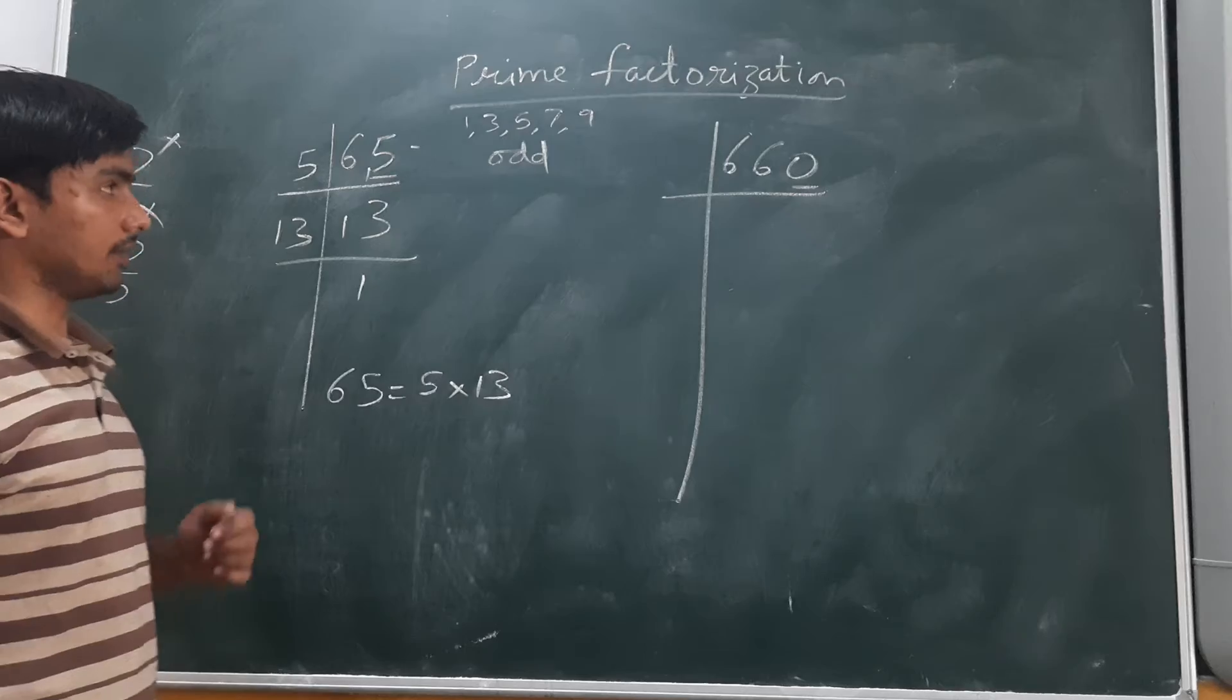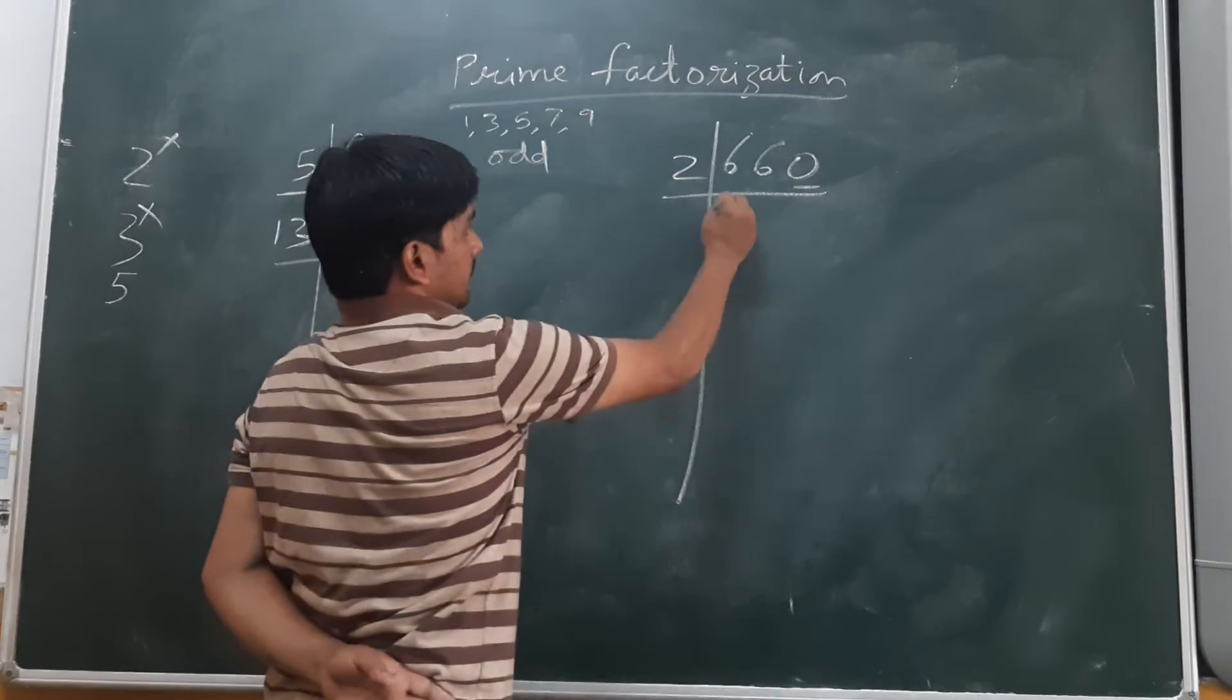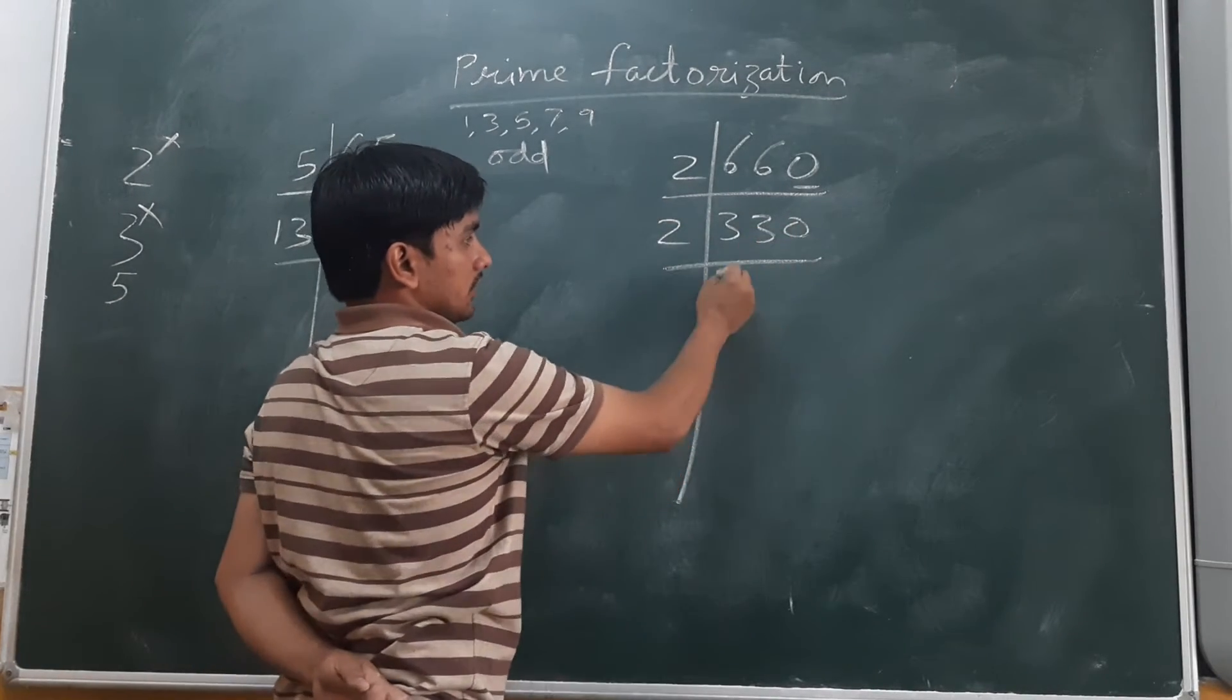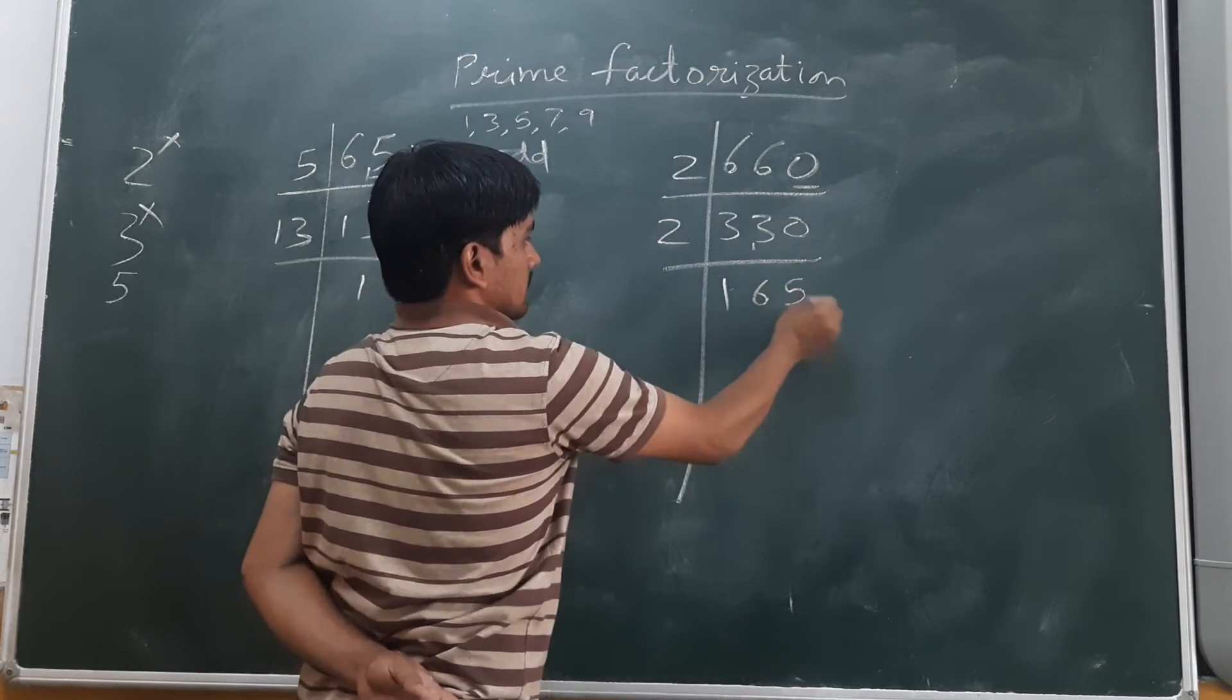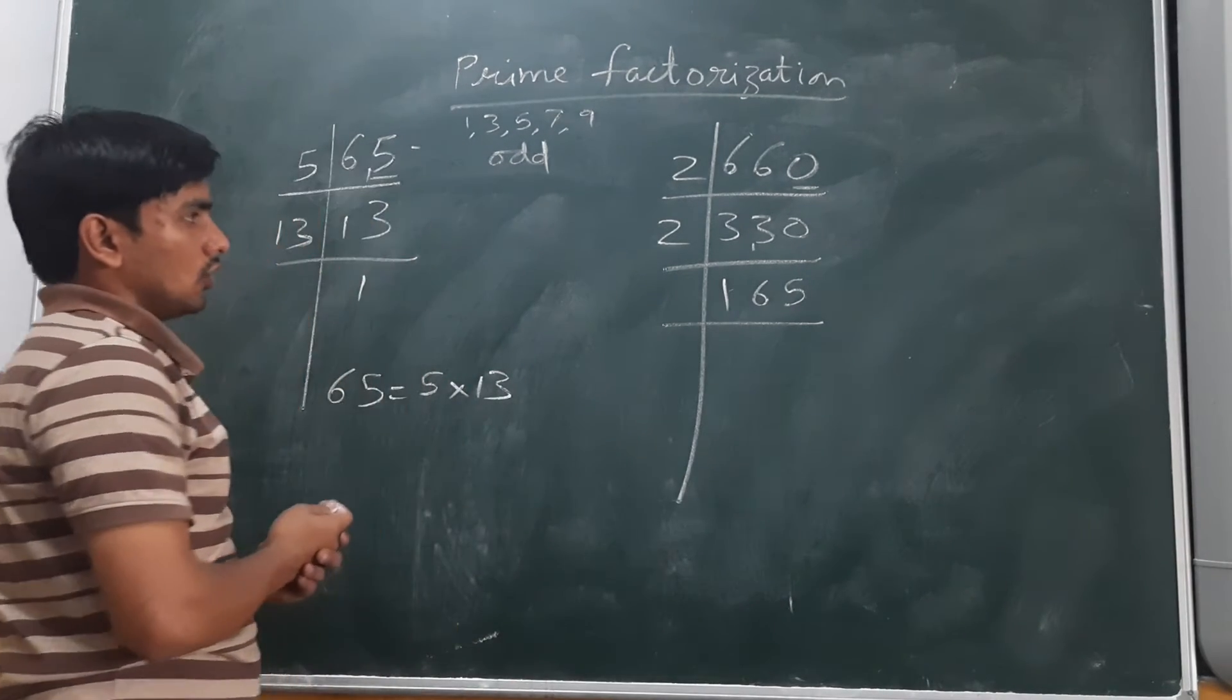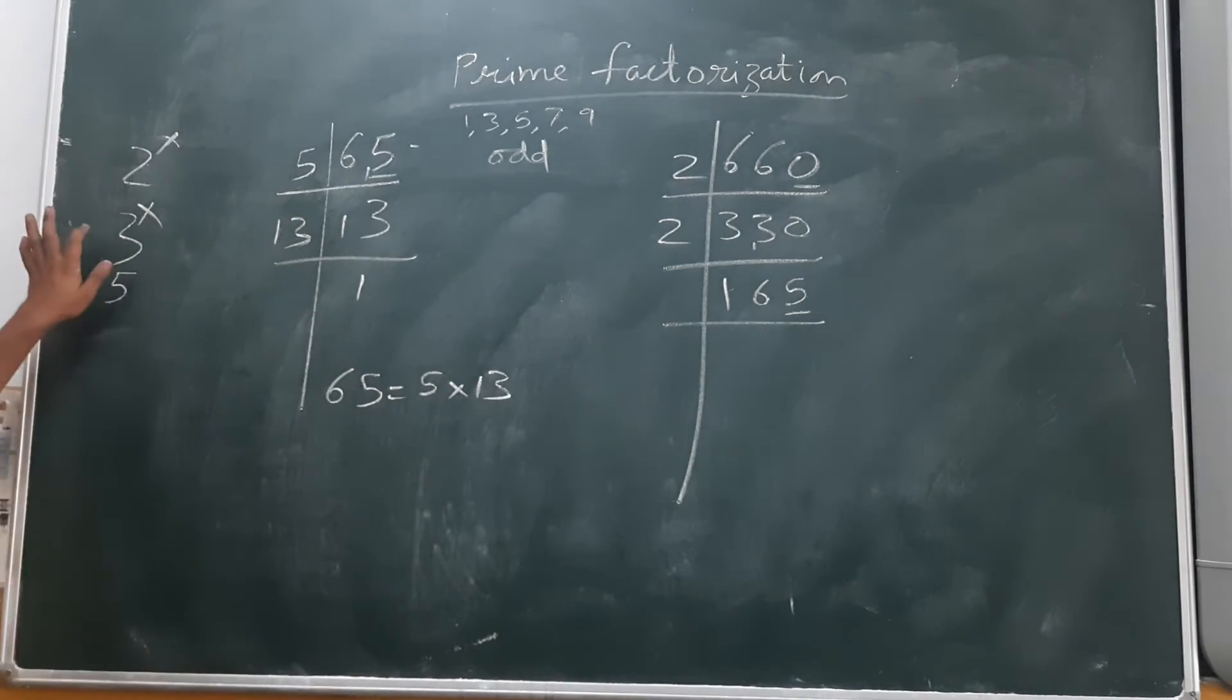It's an even number, we will start with 2 only. What is the half of 660? 330. What is the half of 330? 165. As we got an odd number, so where will we come?